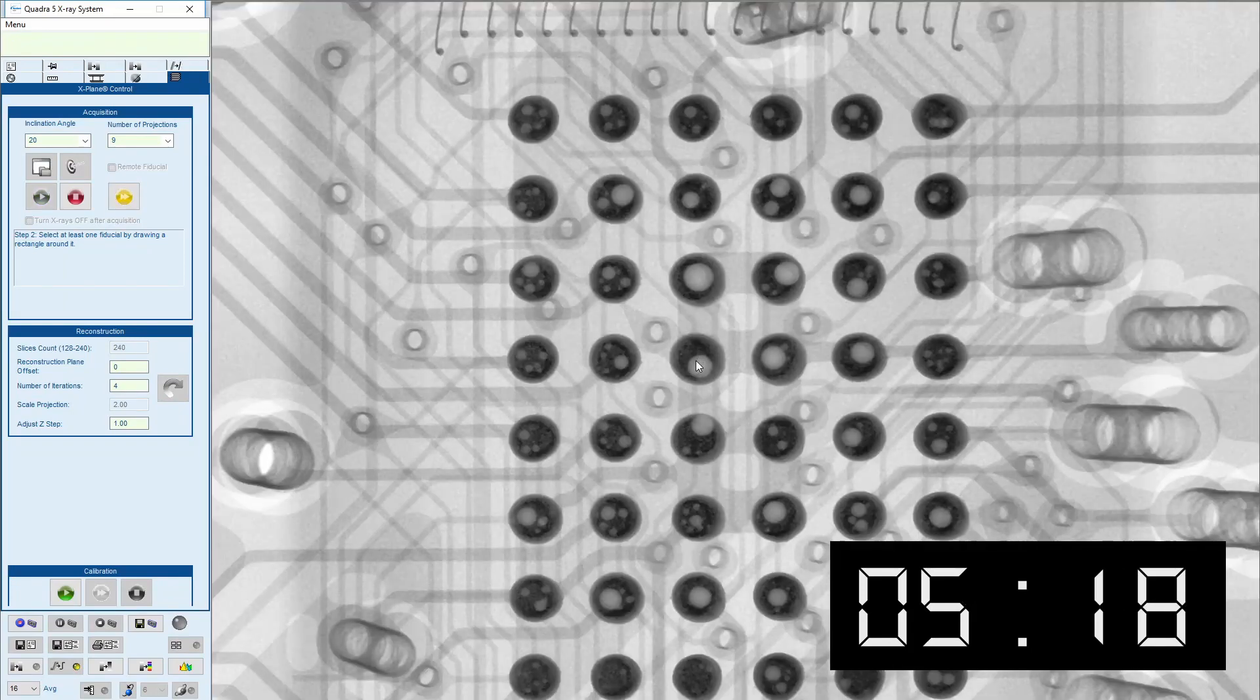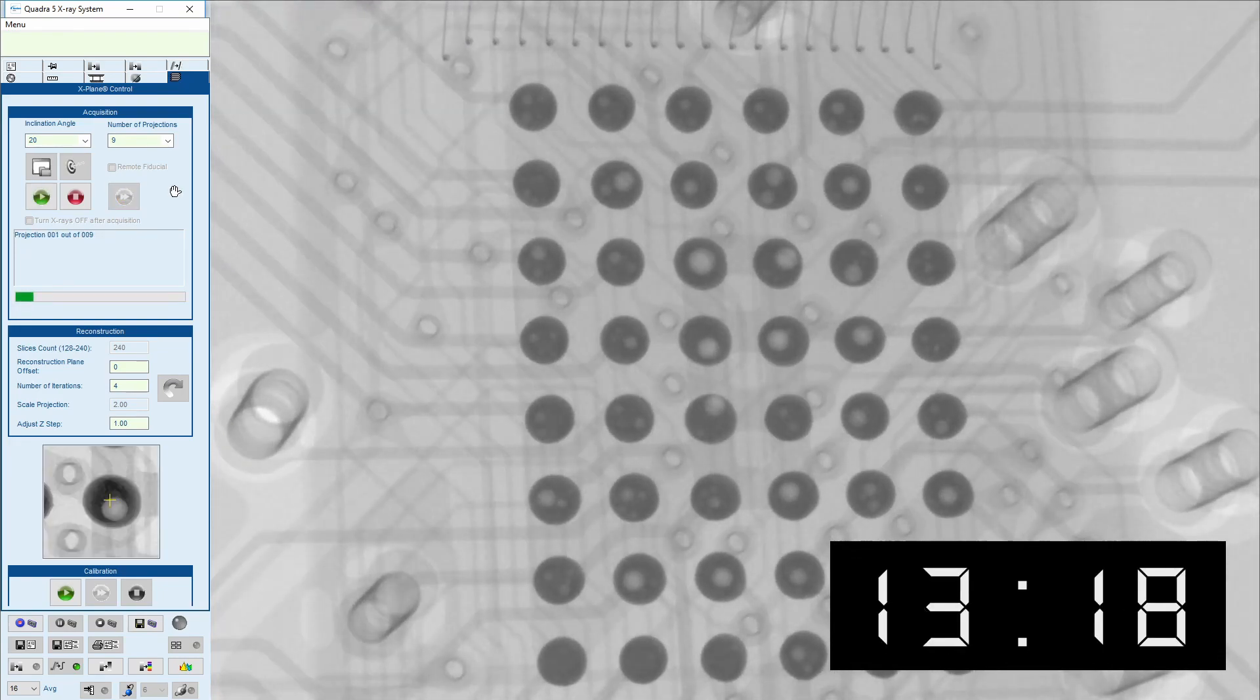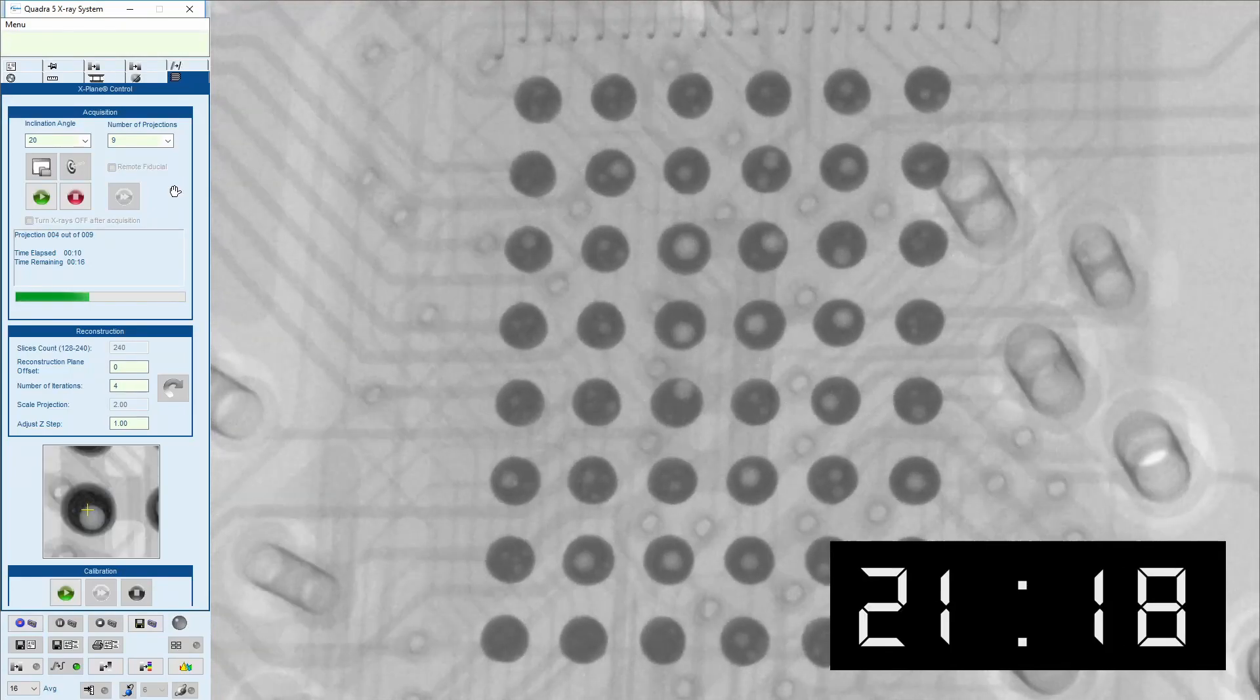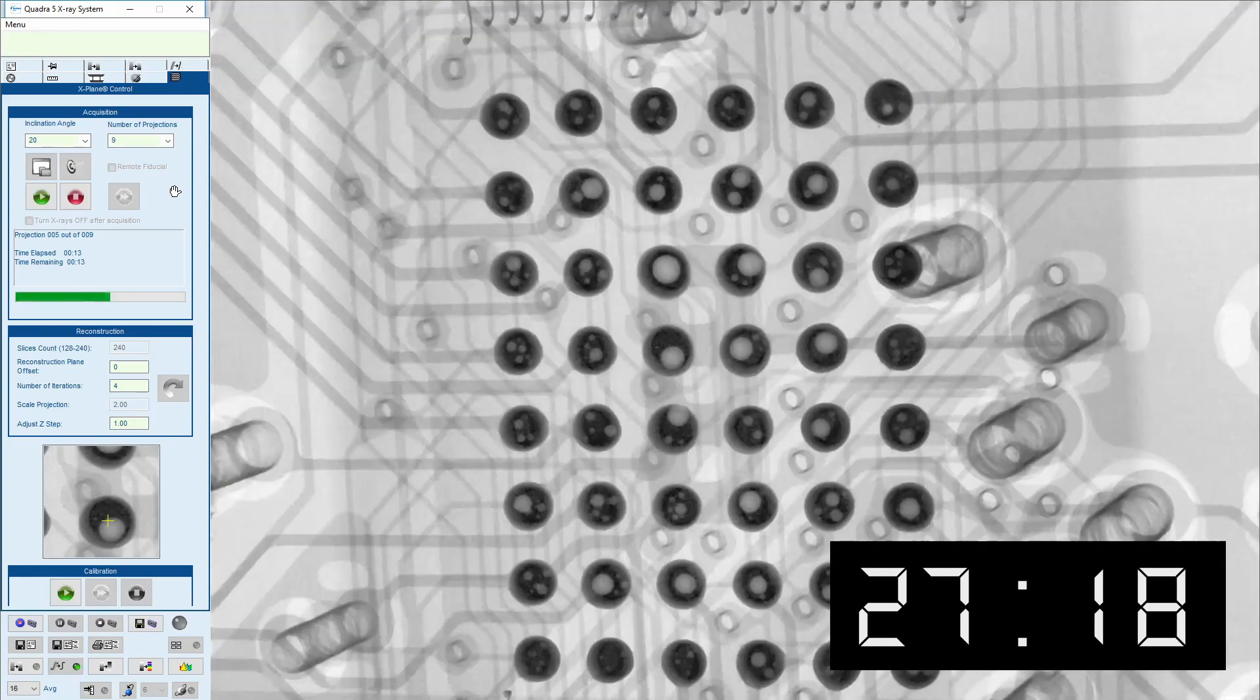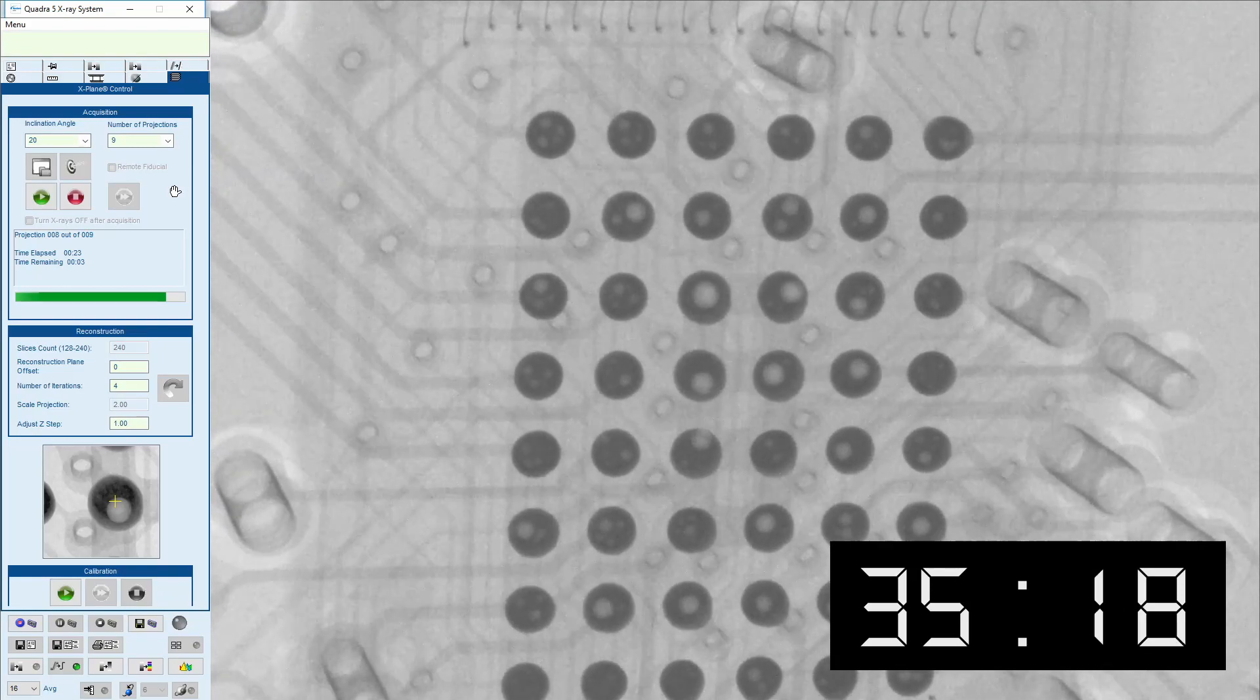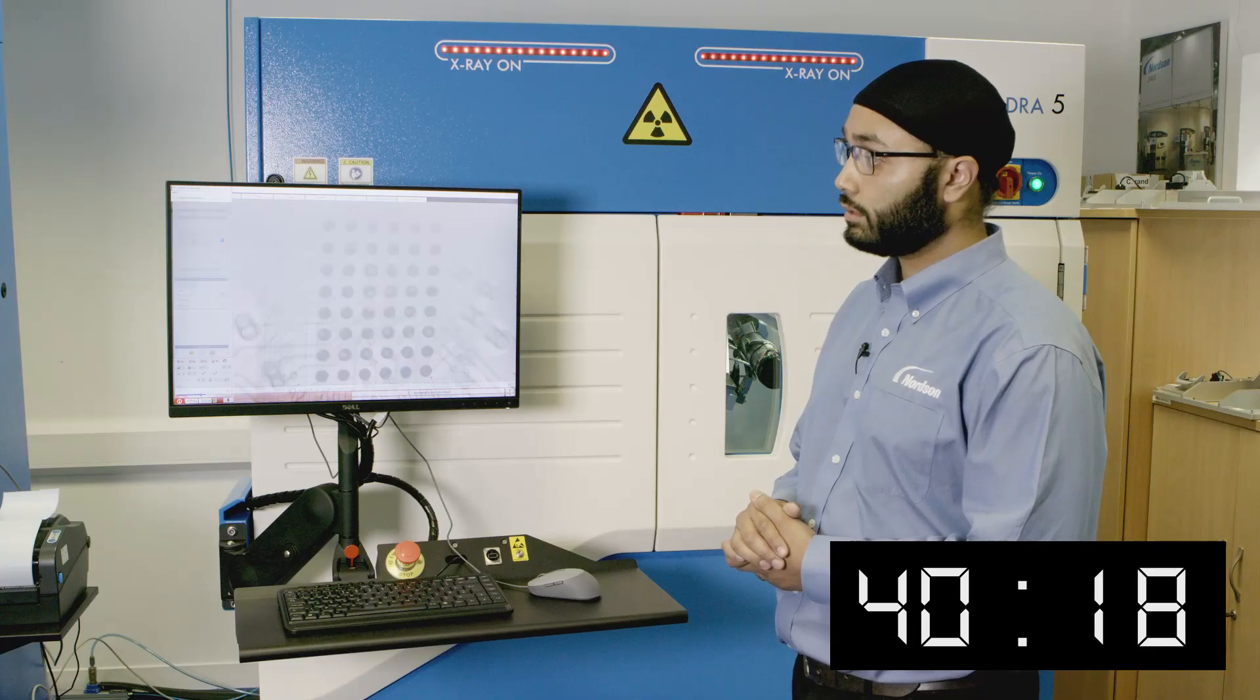Draw the fiducial. Click start scan. The software will take one image every 40 degrees. And as quick as that, the x-plane scan is finished.